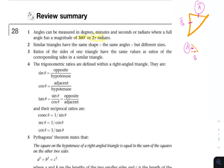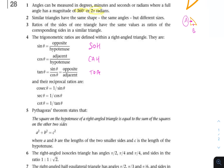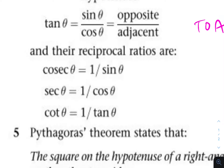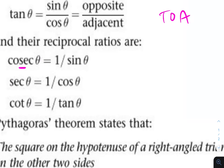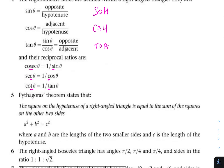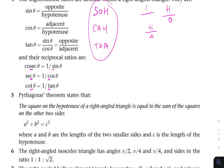The trigonometric ratios — sine, cosine, and tangent — are defined within a right angle triangle. There are also the reciprocal ratios: cosecant, secant, and cotangent. To remember which pairs with which: cosecant pairs with sine, secant pairs with cosine, and cotangent pairs with tangent. A helpful trick is to look at the third letter — it matches up with sine, cosine, and tangent. These reciprocals are just one divided by the original ratio, so instead of opposite over hypotenuse you get hypotenuse over opposite, and so on.